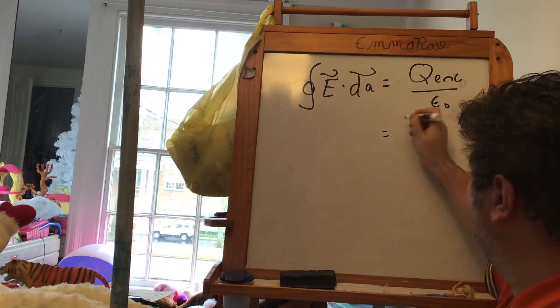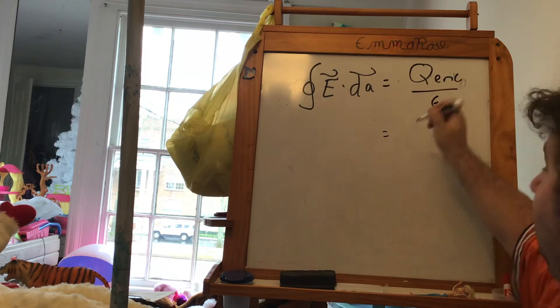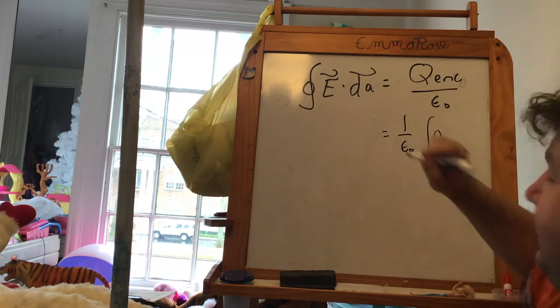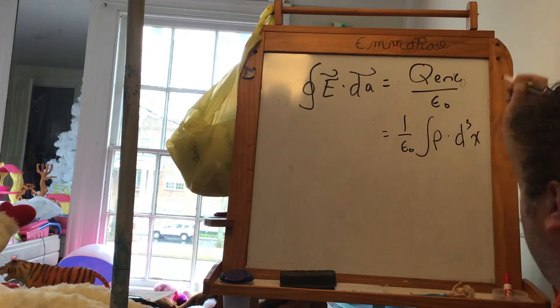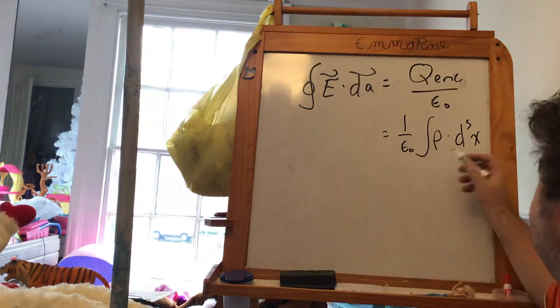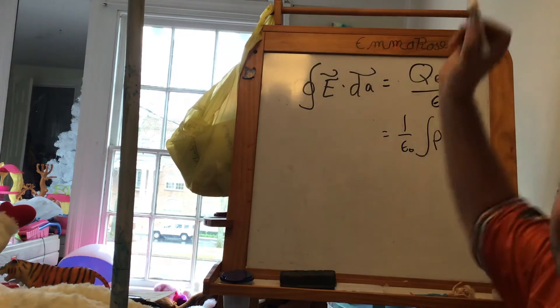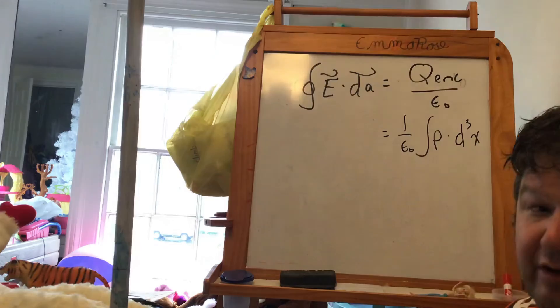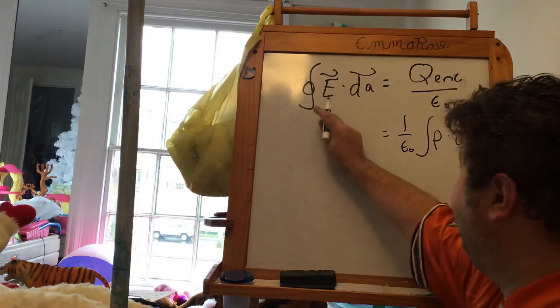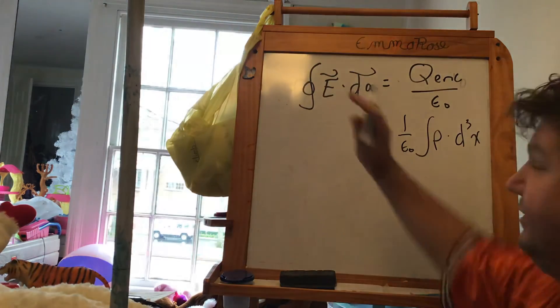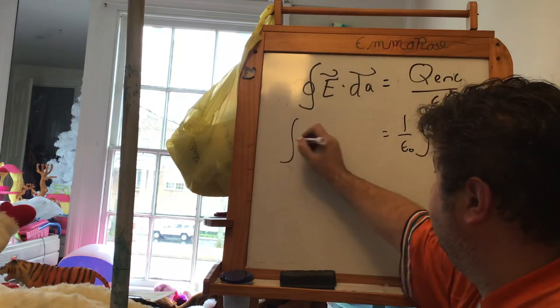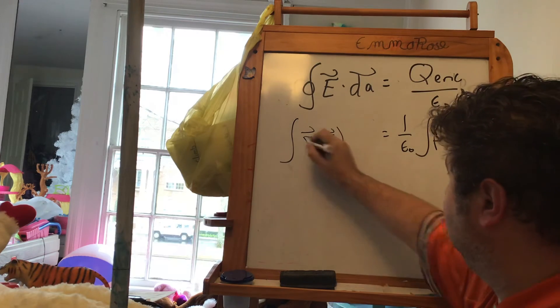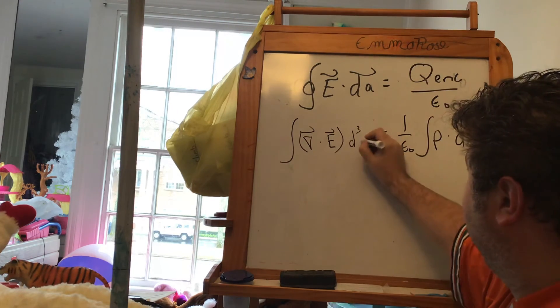So this here, if it's the charge, we can rewrite this as the charge density times a volume element. Just saying that the charge density times the volume gives me the charge. And we can apply Green's theorem here, which says that if I have an integral over a closed surface dot dA, then this is going to be equal to the divergence of that vector integrated over a volume. So this is Green's theorem, or the divergence theorem.